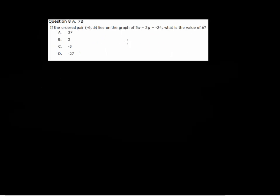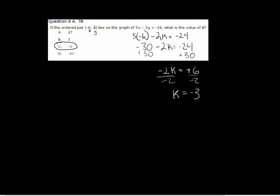So this problem here really just tests your ability to make connections between ordered pairs and equations. negative 6 is an x, k is a y, so rewrite this equation with 5 times negative 6 minus 2. Well, y is k, so why not? Let y be equal to k equals negative 24. 5 times negative 6 is negative 30 minus 2k equals negative 24. If you add 30 to both sides, you'll come up with negative 2k equal to positive 6. Divide both sides by negative 2, and you get k equals negative 3. And yes, of course, the lazy man's way would be to plug in negative 6 for x and then go try 27, 3, negative 3, and negative 27 for y and see which one gives you a correct answer.